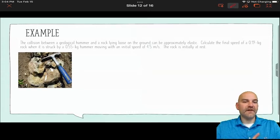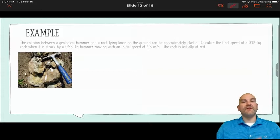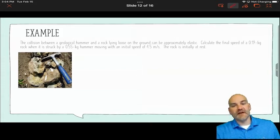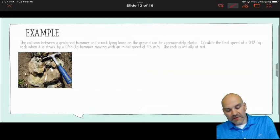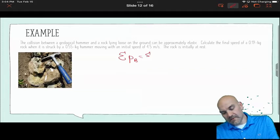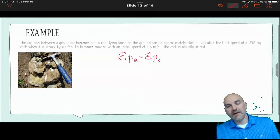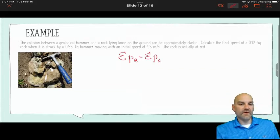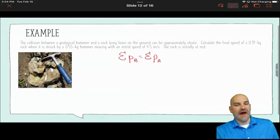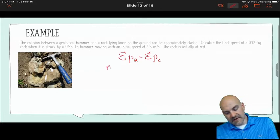Calculate the final speed of a 0.19 kilogram rock when struck by a 0.55 kilogram hammer, moving with an initial speed of 4.5 meters per second, and the rock is initially at rest.